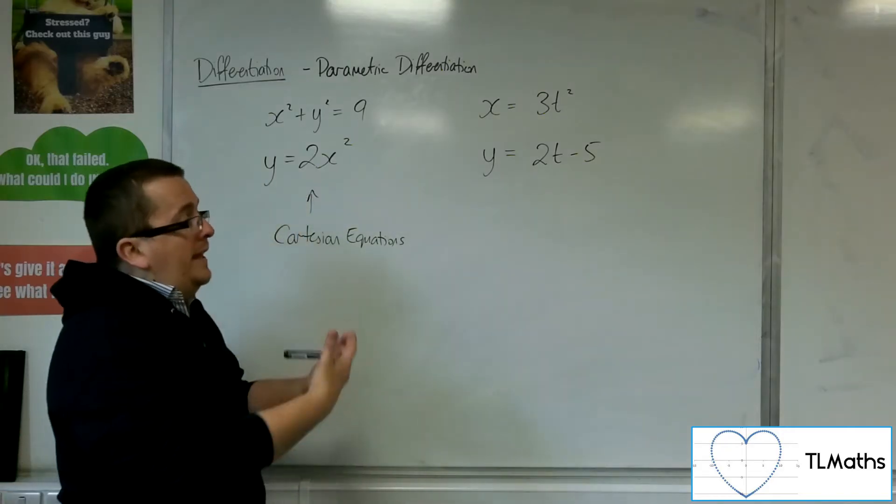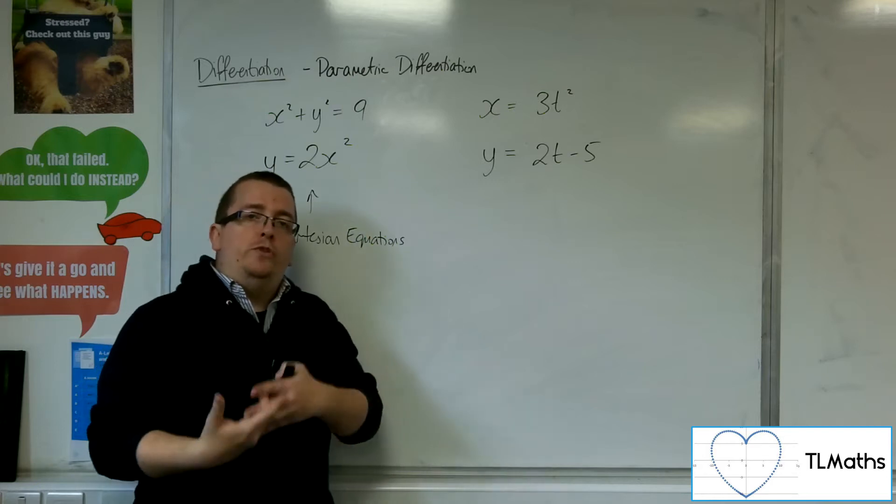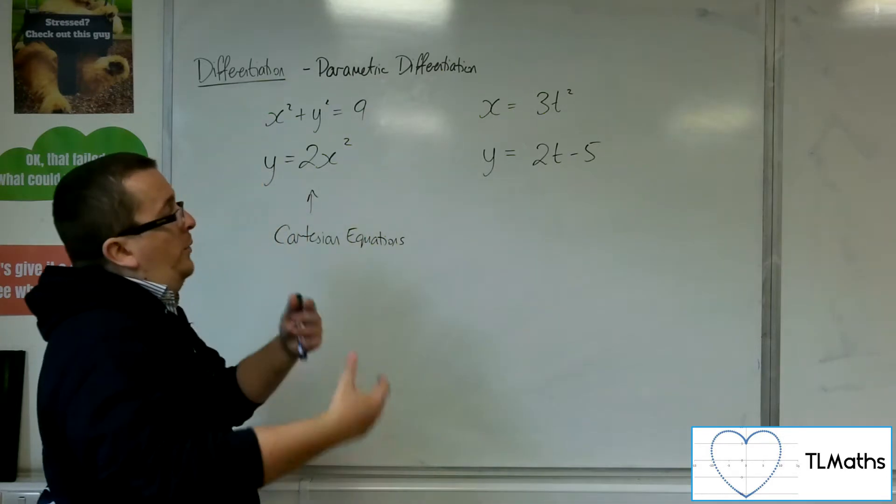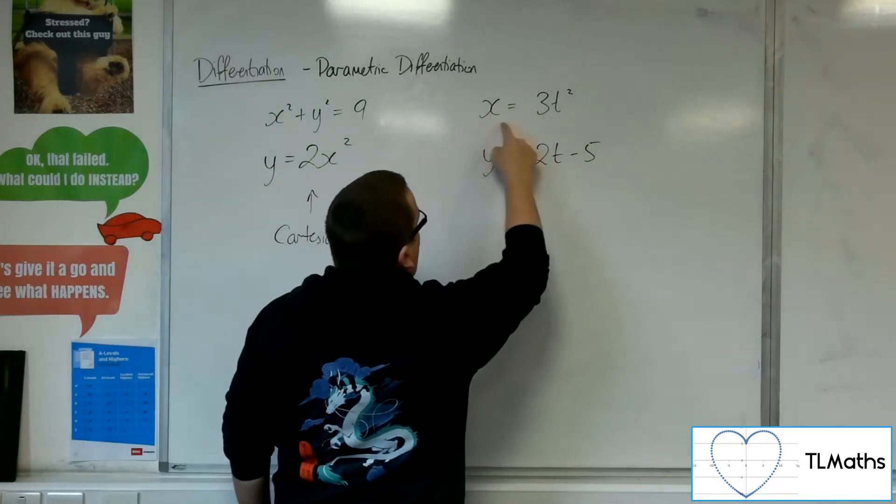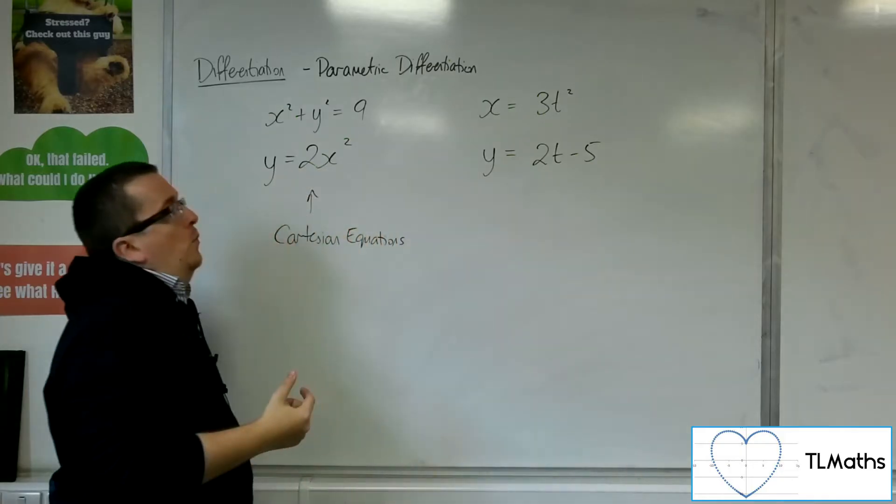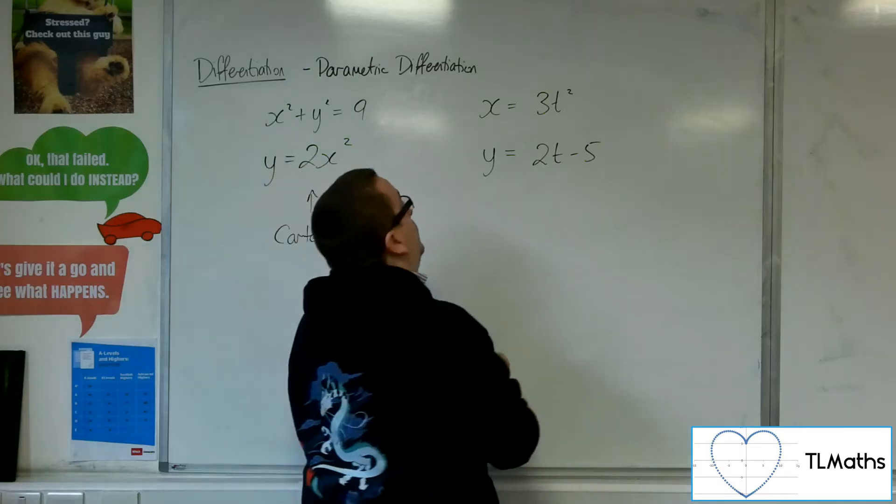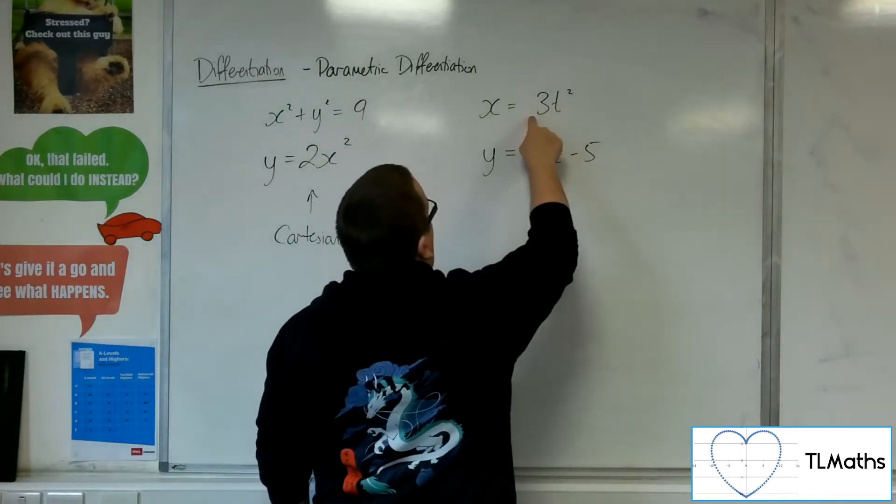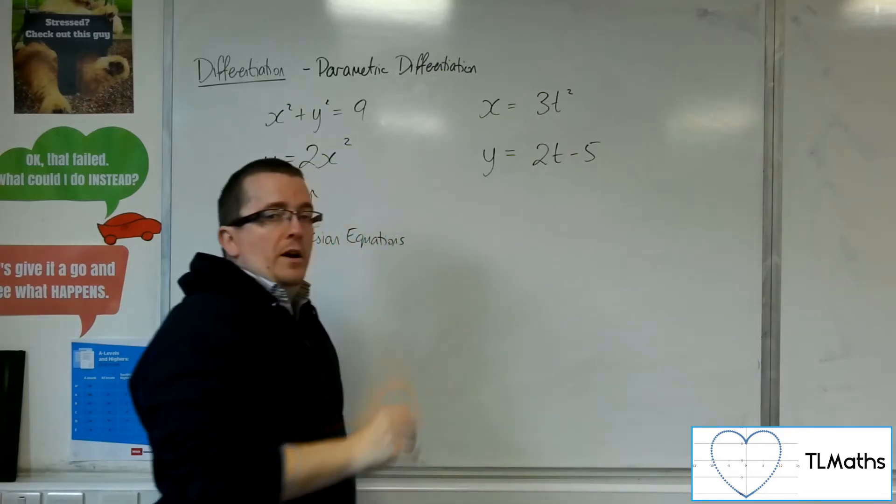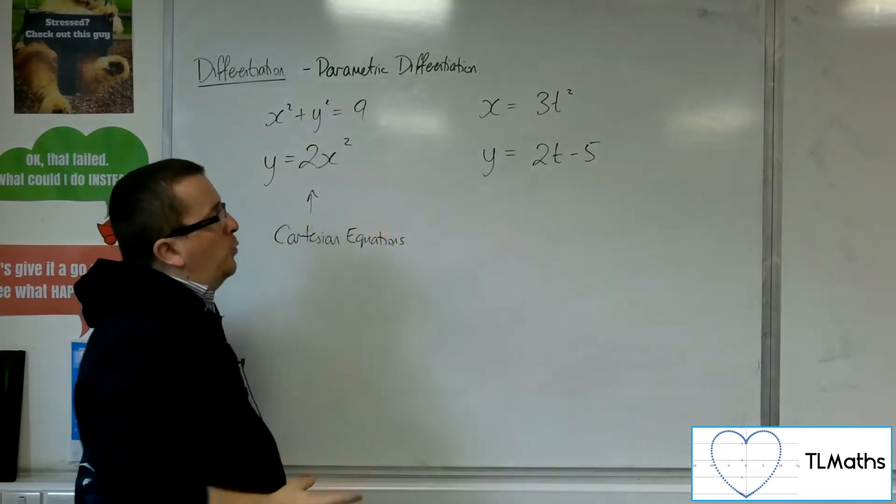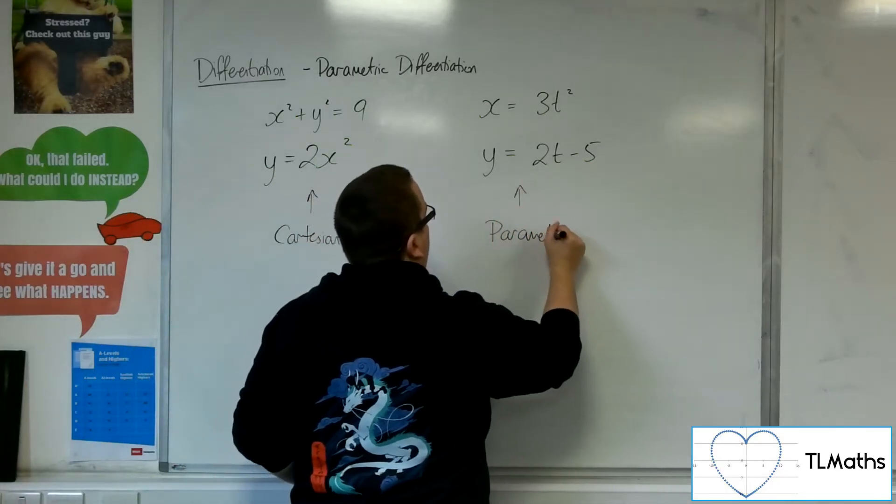And so what you're looking at is how the coordinates are changing with respect to time. So as time moves on, the particle is given by its coordinates x and y. So when t equals 0, initially, for example, we would be at 0 minus 5. OK, and then as time goes on, the particle will move governed by those equations. So these would be referred to as parametric equations.